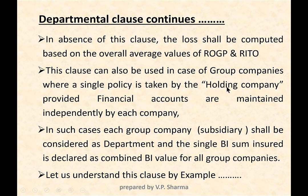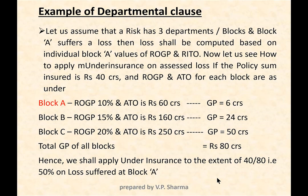Where trading results are separately available for each group company, in the event of a loss the computation will be based on the accounting figures of that particular company. Each group company shall be considered as a department, and a single BI sum insured is declared as a combined BI value for all group companies.